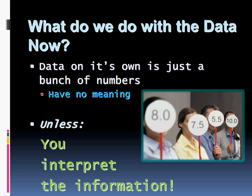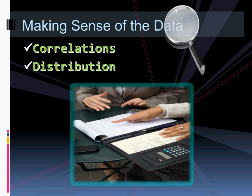By this point in time, you've taken all of your survey data and entered it into some sort of spreadsheet or document in which you can look at the numbers. But that's all it is — a bunch of numbers that have no meaning. The only way those numbers have meaning is if you interpret the information. There are various ways you can interpret, and the two that we'll look at today are correlations and distribution.